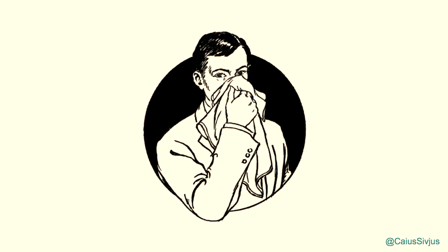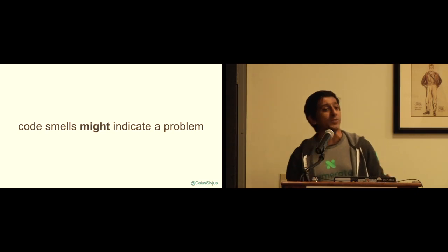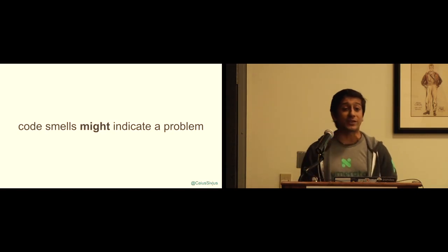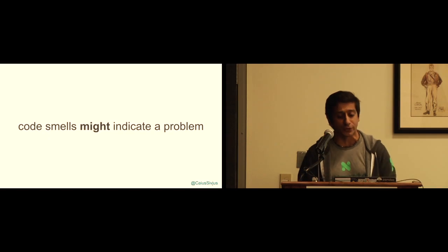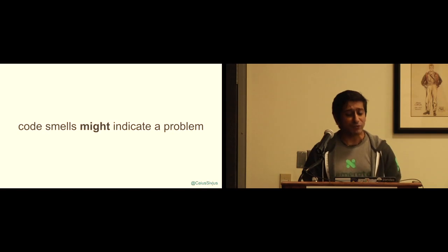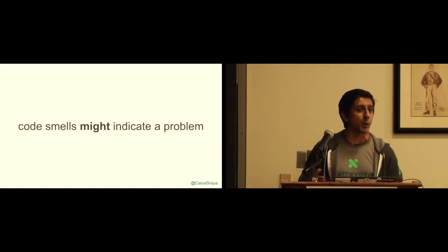When you have code that's hard to understand and difficult to modify, we call that a code smell. This is a term that refers to a programming pattern that might indicate that something is a problem. Code smells might indicate a problem — it doesn't mean there's definitely a problem. If something's difficult to understand, is there a way we can simplify that logic? If changes are taking too long, can we modify our design to move faster going forward?